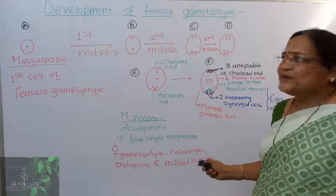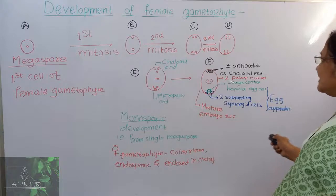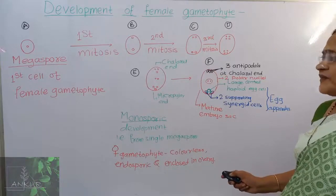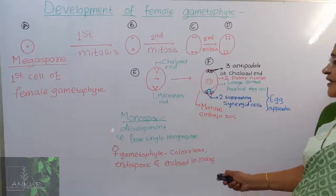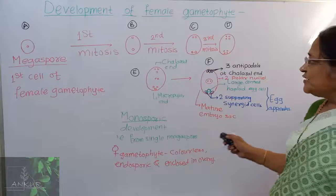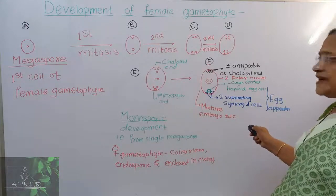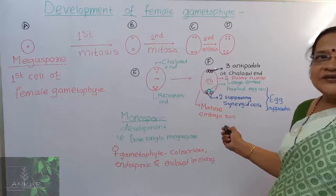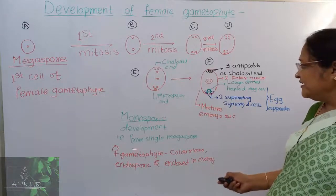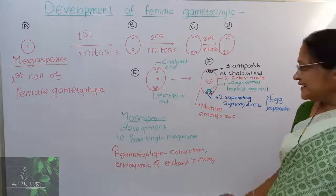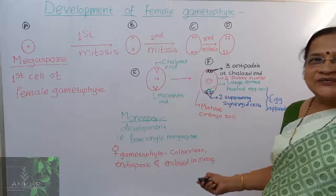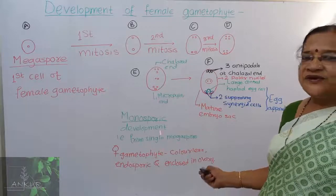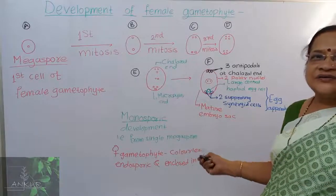This embryo sac development — from the megaspore through all stages of development of the female gametophyte — is called monosporic, because from a single megaspore all this development takes place. The female gametophyte is a seven-celled, eight-nucleated structure consisting of antipodal cells, the central cell with two polar nuclei, the egg cell, and two synergids. It is colorless and endosporic. After pollination and fertilization, the ovary gets converted into fruit and the ovule structure gets converted into the seed.